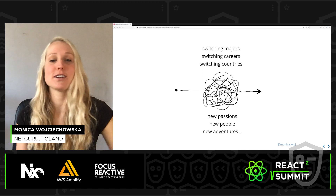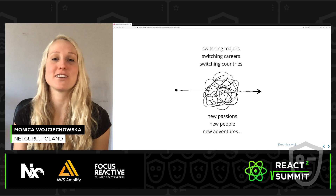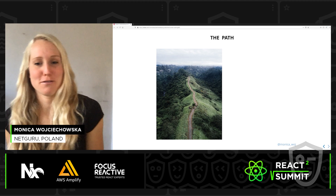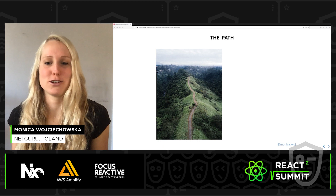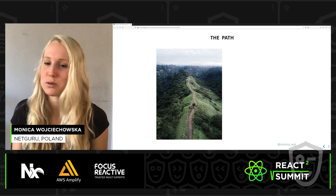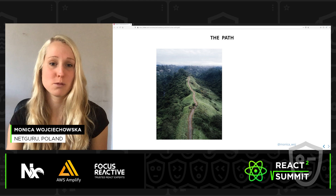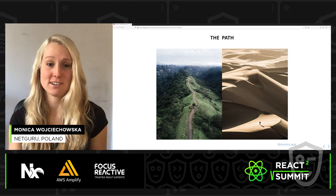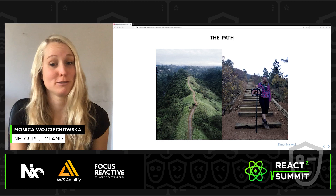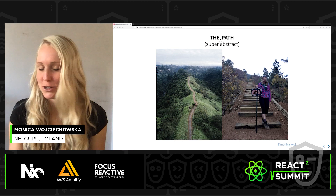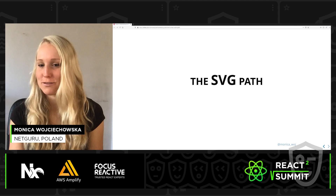The reason I'm telling you all of this in a bit more detail than a single slide introduction is to show by example that our paths are rarely straight. They bend, they twist, they turn. And even when it does look like a straight path, there's often some sort of roadblock that makes it inaccessible. But that's the super abstract path of life — today we'll focus on a bit less abstract of a path: the SVG path instead.